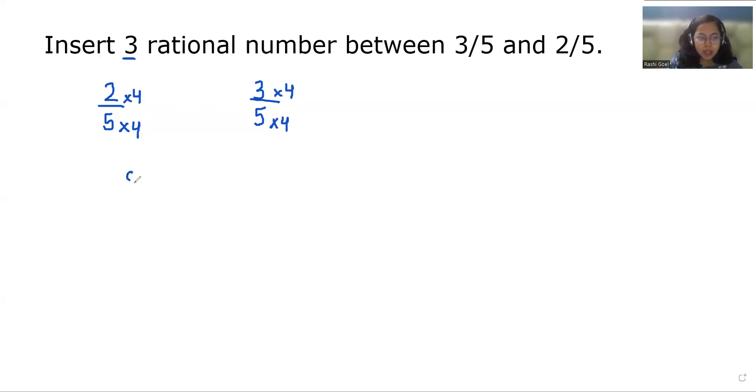Now the numbers become 8 by 20 and 12 by 20. Now we have to insert three numbers. So 8 by 20, in between 9 by 20, 10 by 20, and 11 by 20. So these are the three rational numbers that we can insert between 3 by 5 and 2 by 5.